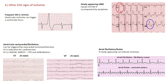Other less known signs of ischemia include: frequent ventricular extrasystoles, meaning more than six per minute; newly appearing left bundle branch blocks, which should always be treated as an NSTEMI if accompanied by symptoms of myocardial infarction such as pressure sensation in the chest or radiating pain up the left neck, jaw, shoulder or arm in a patient in a bad state. Ventricular tachycardia and fibrillation can also be triggered by ischemic events, as can atrial fibrillation and flutter.